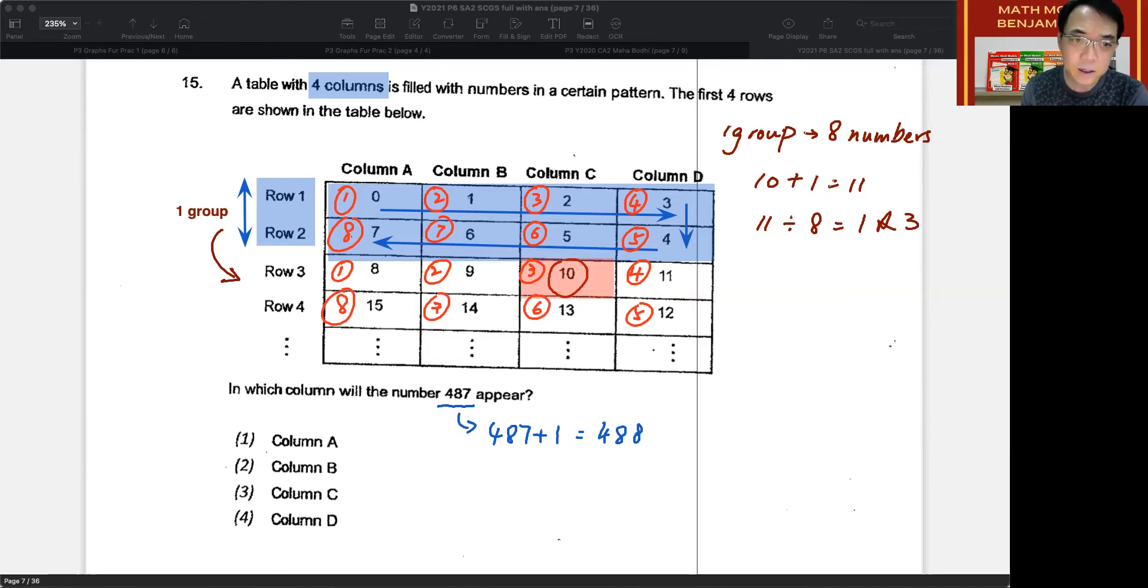And as you can see very clearly that 10 is actually a 3. So this 3 is the same 3 that you are seeing over here. And since 3 is in column C, I now know that if the question was asking me, in which column will the number 10 appear, the answer is column C.